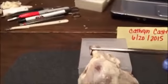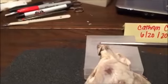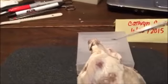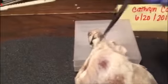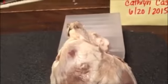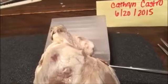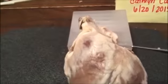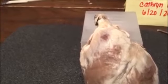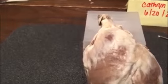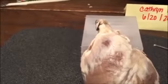The right auricle and left auricle are these pouches right here — this would be the right and this would be the left. Essentially, they are wrinkled pouch-like structures and their purpose is to increase the capacity of the atrium and also increase the volume of blood that the atrium is able to contain.